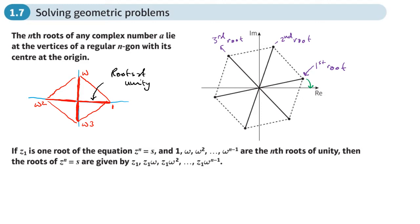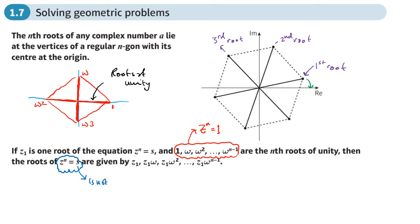We can actually use the roots of unity to find the roots of any complex number. If z1 is one root of this equation — so z1 is the root of a complex number that's not one — and these are the nth roots of unity, so this is how we would write down the roots of unity, the roots you get when you solve z to the power n equals 1. I'm going to show you how we can easily work those out without solving equations. Then the roots of a slightly different equation, where this isn't one, can be found using this method.